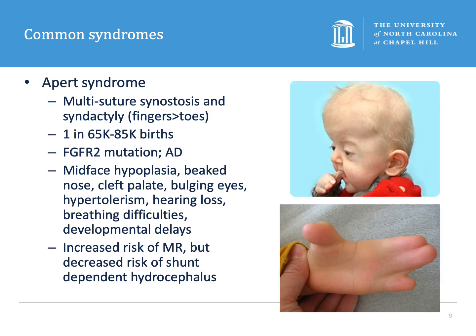Apert syndrome is another sporadic autosomal dominant FGFR mutation resulting in multi-suture craniosynostosis and craniofacial syndrome. It occurs in 1 in 65,000 to 85,000 births and is characterized by synostosis, polysyndactyly, midface hypoplasia, a beaked nose, bulging eyes, hypotelorism, hearing loss, breathing difficulties, and developmental delays. These patients are at an increased risk of intellectual disability but at a lower risk for development of shunt-dependent hydrocephalus compared to Crouzon syndrome.